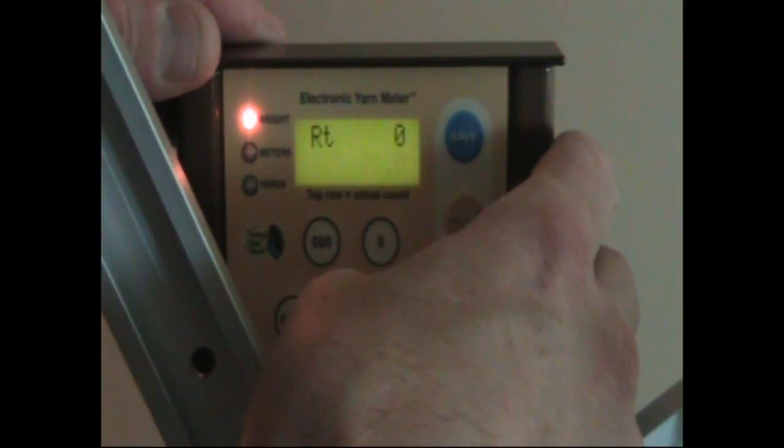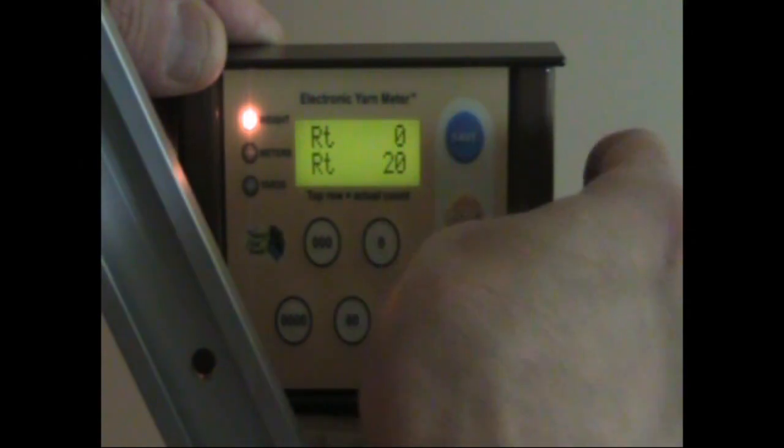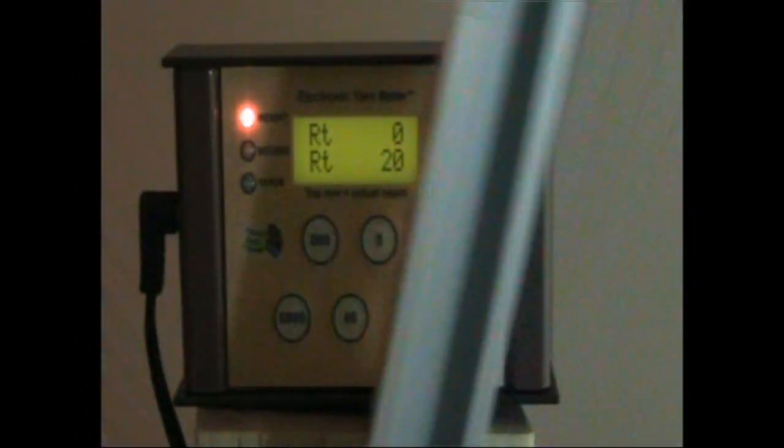I'm just going to enter a number of let's say 20 rotations. I'll save that number and you can see on the bottom the number is 20 and on the actual count it's zero. So let's see what happens when it gets to 20.